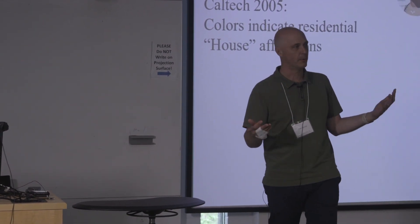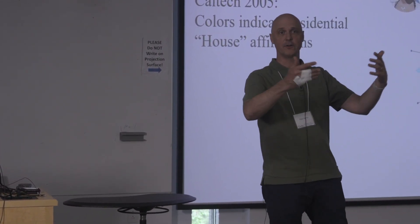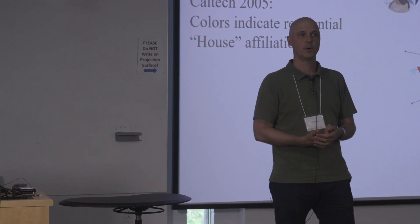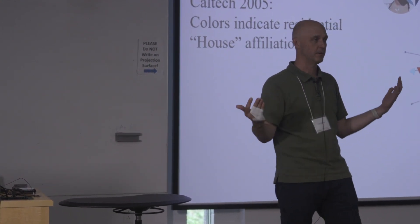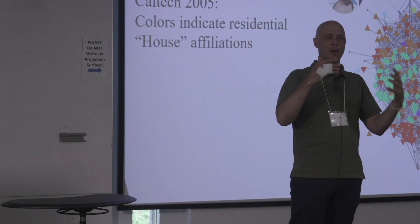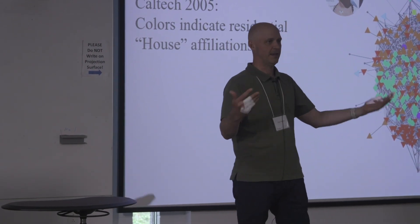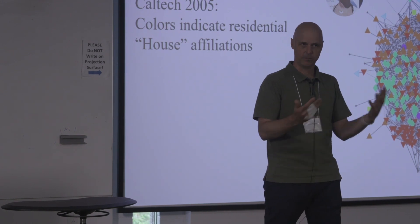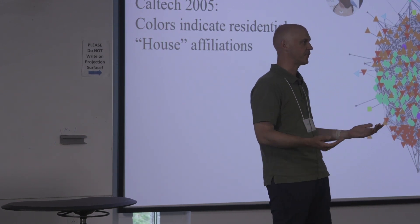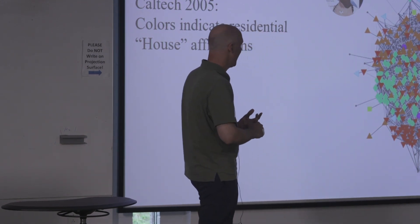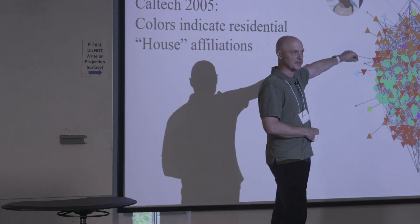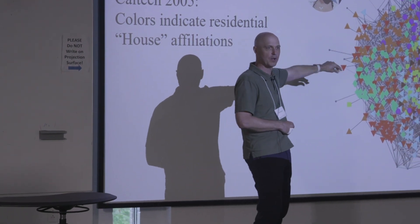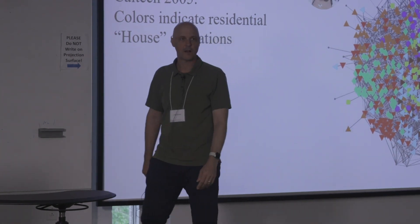I've suggestively colored and Lucky Charms symboled the nodes according to the houses that these Caltech Facebook users were affiliated with. The urban myth version is that students all show up and it's some crazy self-sorting into these residential houses, and they largely stay affiliated with the same house their whole four years. So we're not surprised to see some clumpiness according to the colors.